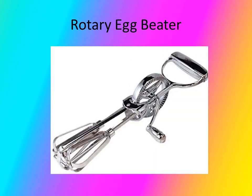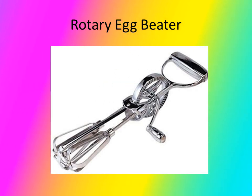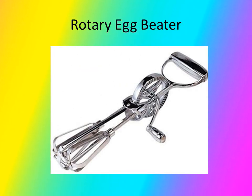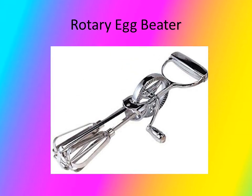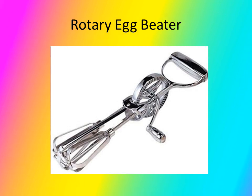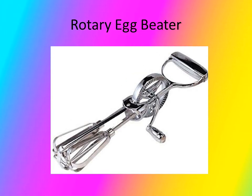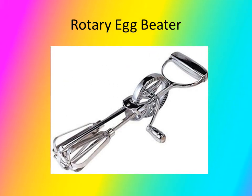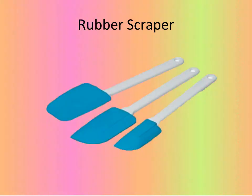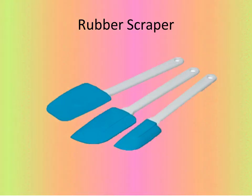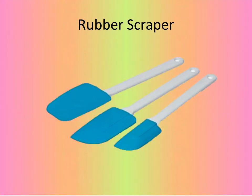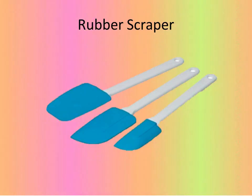Next we have a rotary egg beater. It is used for beating small amounts of eggs or butter. The beaters should be made of stainless steel to avoid rust, so it is advisable to buy a rotary egg beater made of stainless steel. Next, we have a rubber scraper — a rubber or silicone tool used to blend or scrape food from the bowl. We usually use this in folding ingredients when making a dough or a batter.